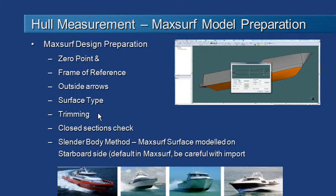You want to make sure that if you have used surface trimming, you've got nice clean unambiguous closed sections all the way down your design. And then for the slender body method there's one final check: you need to make sure that your MaxSurf design is modeled on the starboard side. That is the default behavior for MaxSurf, but be careful if you've imported the data from some other system. So let's switch over to Hull Speed.